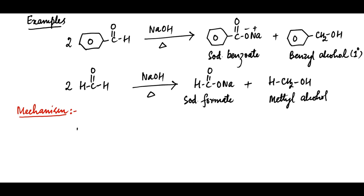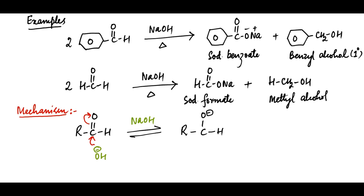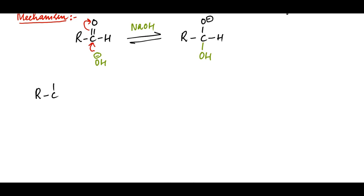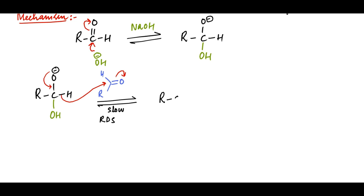In the first step of the mechanism, rapid addition of the hydroxide anion to one molecule of aldehyde results in the formation of a hydroxyalkoxide ion. In the second step, this ion, like aluminium isopropoxide, acts as a hydride ion donor to the second molecule of aldehyde. This step is slow and thus rate-determining. This converts the first aldehyde molecule into the corresponding carboxylic acid, and the second aldehyde molecule is converted into the alkoxide of primary alcohol.